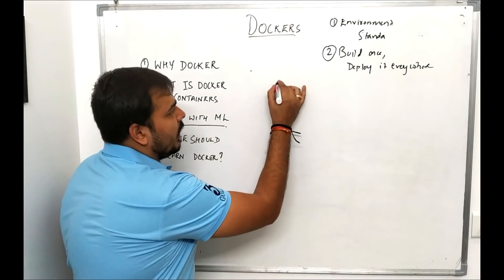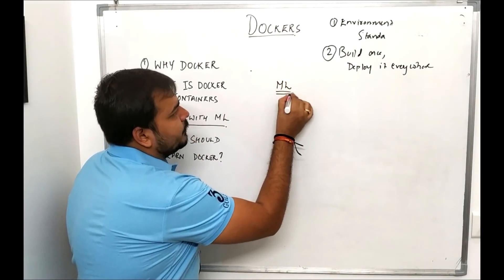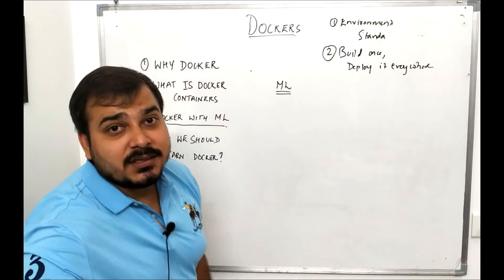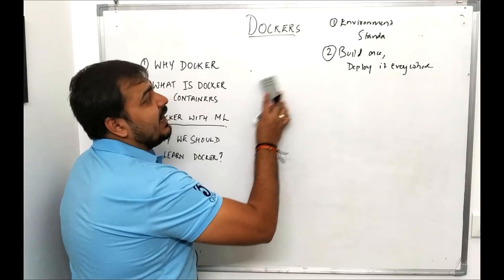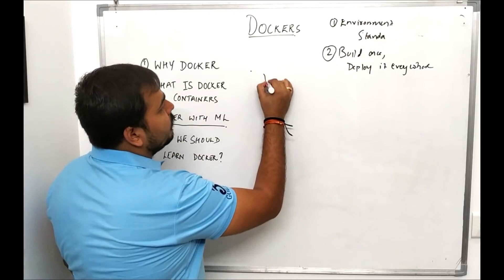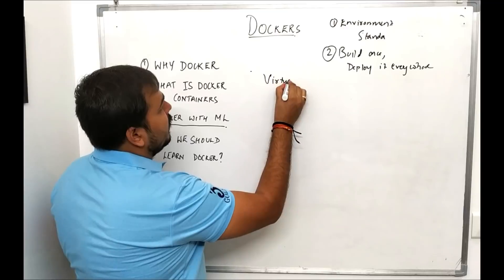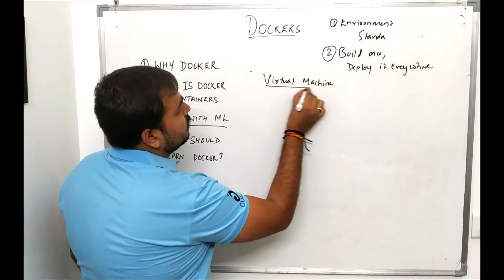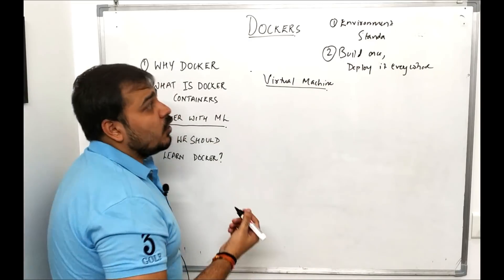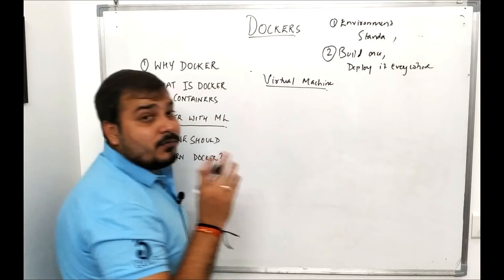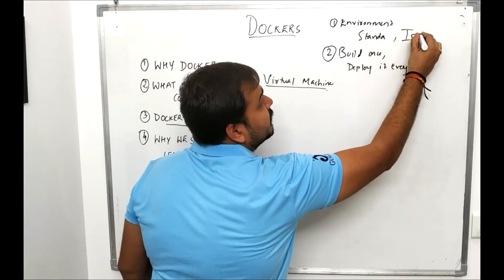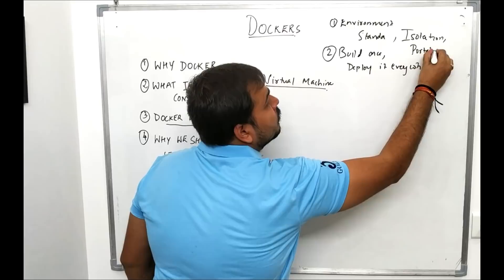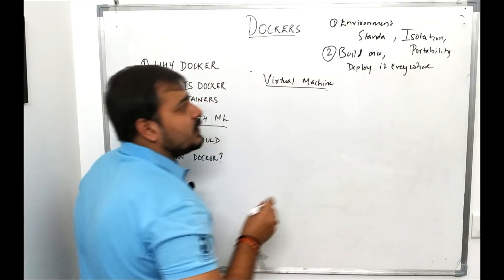One more important point with respect to ML: this environment standardization can also be done with virtual machines. Docker also has two more properties — isolation and portability — which we'll discuss now.